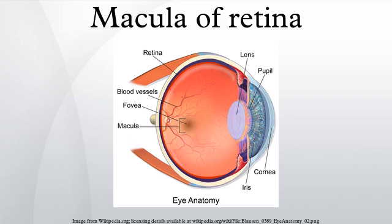The macula, or macula lutea, is an oval-shaped, highly pigmented yellow spot near the center of the retina of the human eye. It has a diameter of around 6mm and is often histologically defined as having two or more layers of ganglion cells.